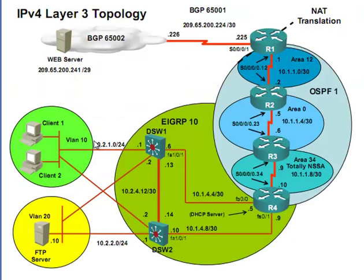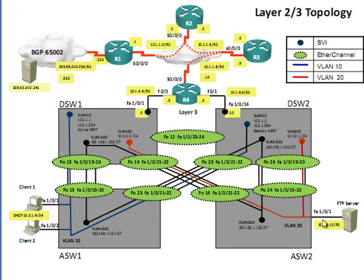On the Layer 3 topology, multiple routing protocols are running — you can see EIGRP, OSPF, and BGP up by the internet service provider. You will look at issues involving all of them. You'll work through pretty much everything in the topology, minus maybe a couple of small parts, as you try to figure out what's going on, especially when you're not exactly sure what the issue is.